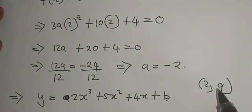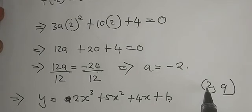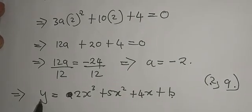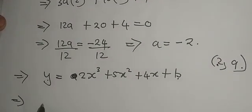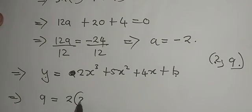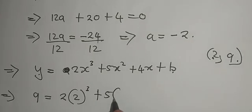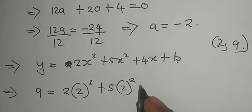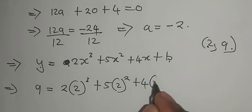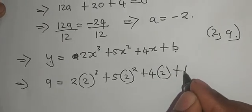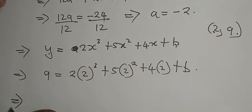So our x is 2, our y is 9. So in place of y here, we substitute 9 = -2(2)³ + 5(2)² + 4(2) + b, which means in this case...